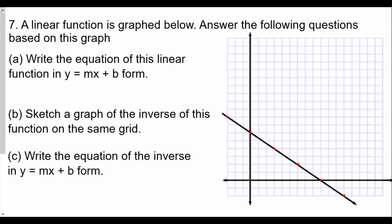A linear function is graphed below. Answer the following questions based on the graph. The first one is to write the equation of this linear function in y = mx + b form. To do this properly, we need both the slope and the y-intercept. The y-intercept is right over here at 6, because that's the y value when x equals 0.